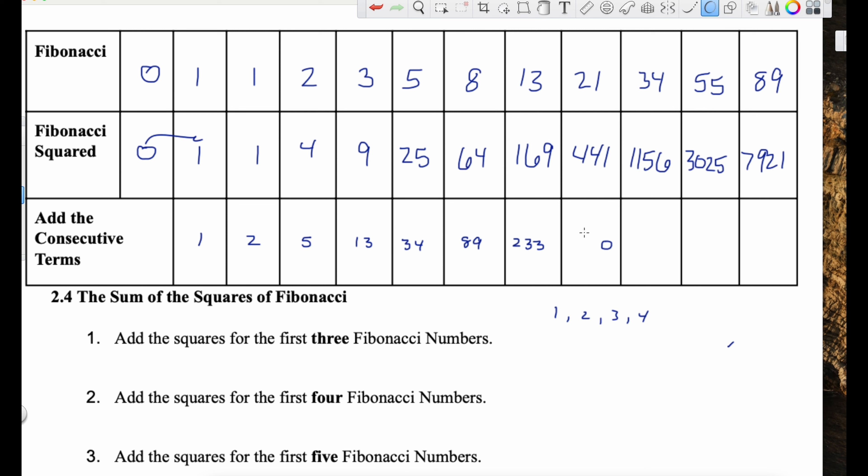And then, let's see, 64 plus 169 is 233. I'll just double check. So we've got, I think that's right, 169 plus 64, 233.